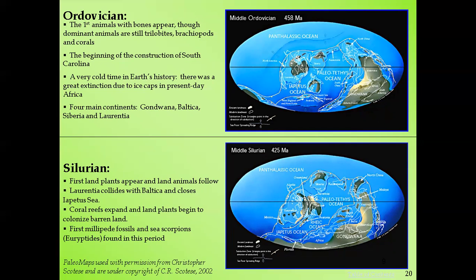The supercontinent Gondwana split into four: Gondwana, Baltica, Siberia, and Laurentia — meaning the continents were slowly breaking apart. During the middle Silurian, about 425 million years ago, the first land plants appeared, followed by land animals. Initially, plants lived in the sea; it was only during the Silurian that plants began growing on land.